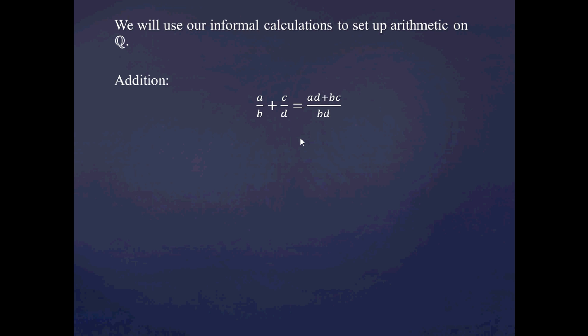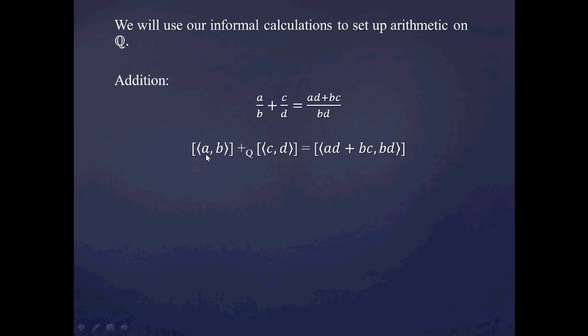Let's now consider arithmetic on the rational numbers, again using informal calculations to inform our definitions. For addition: a over b plus c over d — you find a common denominator b times d and adjust numerators, giving (ad + bc) over bd. So when we add two equivalence classes, picking representative (a, b) and (c, d), the result has first component ad + bc and second component bd. This makes sense because a, b, c, and d are integers and we've already defined integer addition and multiplication.